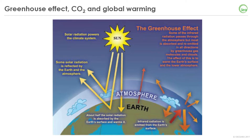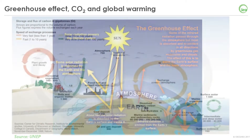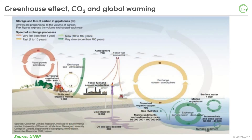For other greenhouse gases, such as carbon dioxide, concentrations are significantly influenced by our activity. The carbon flows through our system following different cycles. Some are occurring naturally, like plant growth or decay, and others are forced by human activity, such as CO2 emissions from fossil fuel combustion. These cycles take place in different time frames.